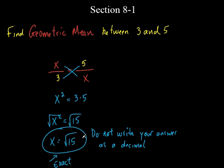The last class had a hard time with that — they wanted so badly to turn it into a decimal. It's a lot easier to just keep it as the square root of 15. There are times when you can write it as a decimal and that's fine, but for right now let's just keep it like that. When you get into Algebra 2 you'll work with square roots a lot.